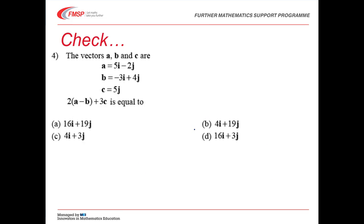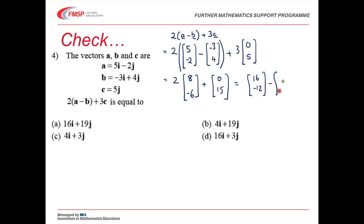One last one for you to have a go at. Pause the video again and try this one. I've got two A minus B plus three lots of C. So that's two lots of, A is five minus two. And you'll see I'm working in column vectors again. Minus B minus three, four. Plus three lots of C. Which is zero, five. So that's two lots of five take away minus three is eight. Minus two take away four is minus six, plus three lots of nought five. Which is nought fifteen. So that's sixteen minus twelve, take away nought fifteen.